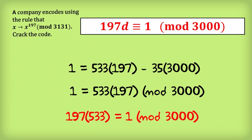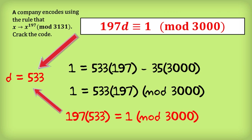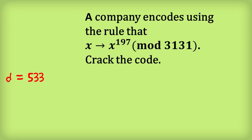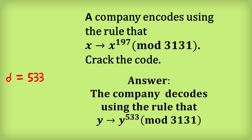Comparing the two equations in red, we conclude that d — the decoding key for the RSA code — is equal to 533. So the answer to the exam question is that the company decodes using the rule that y becomes y to the power of 533 modulo 3131. That's it for RSA code made easy. I hope you found it useful.